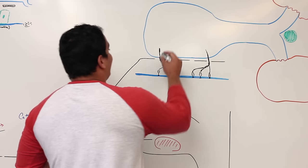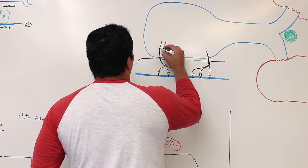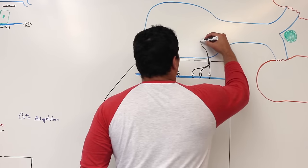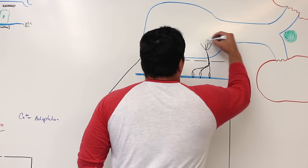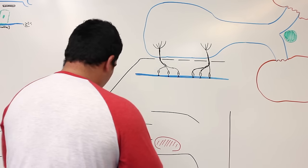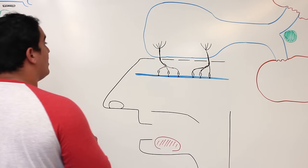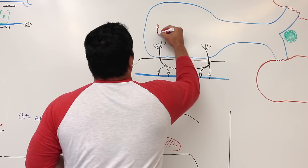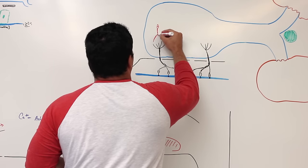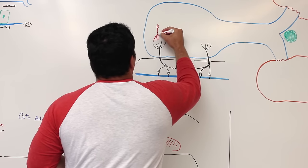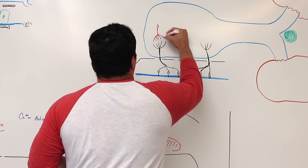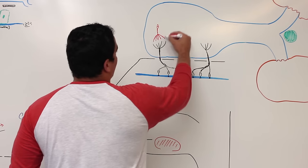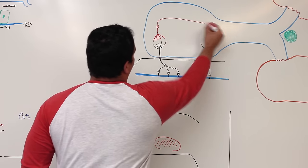In the olfactory bulb, the olfactory axons give off their axon terminals — a bunch of different axon terminals. There's another cell in this area that also gives off extensions here. These extensions are going to interact with those axon terminals. This other cell has dendritic extensions and an axon.